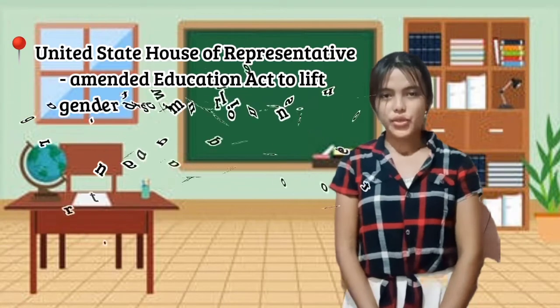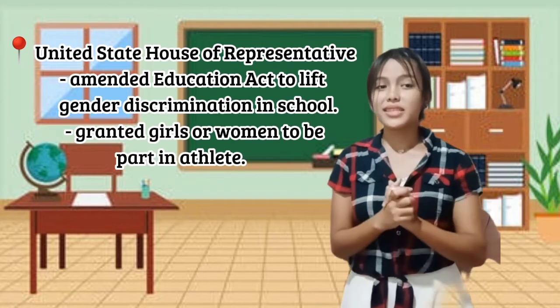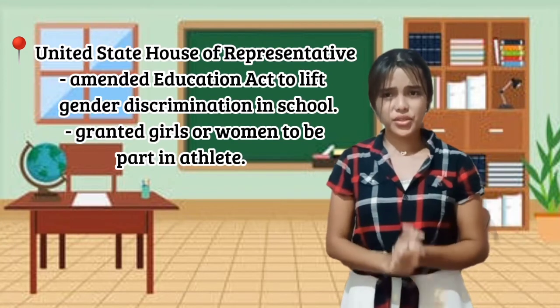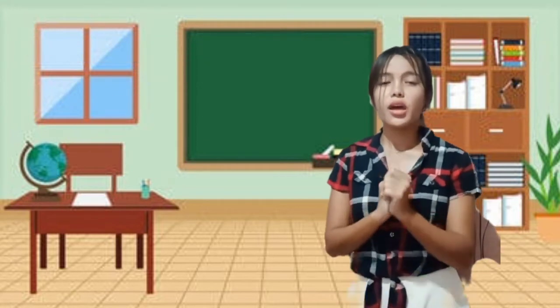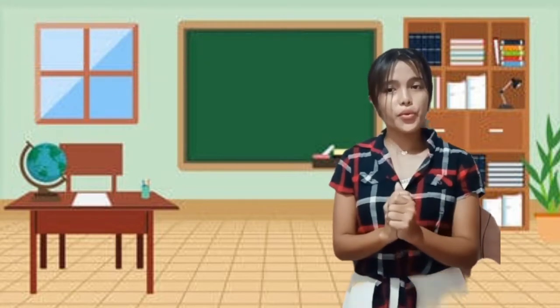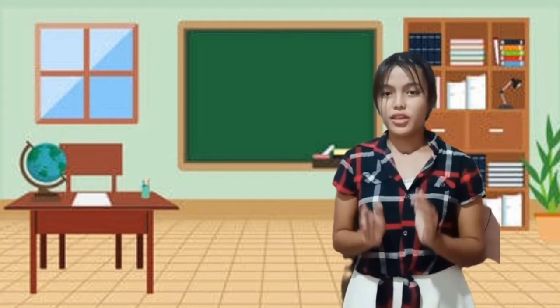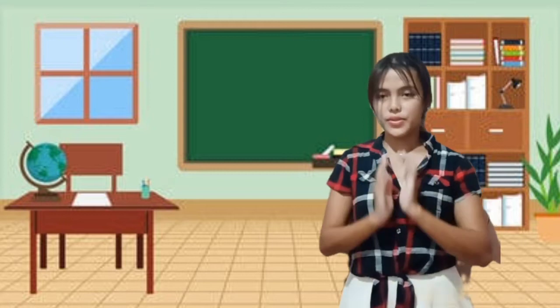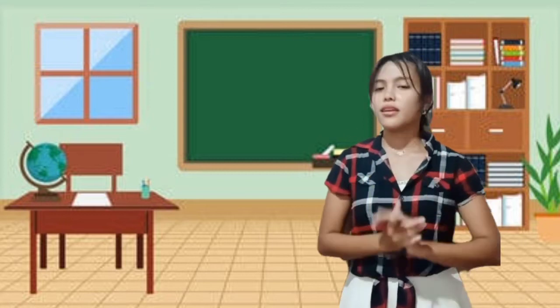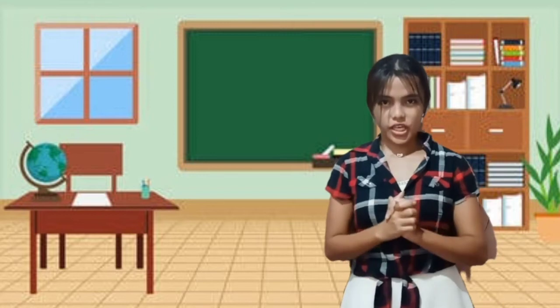In 1975, the United States House of Representatives amended the Federal Education Act in order to lift gender discrimination in school physical education programs. This granted girls and women new opportunities to participate and compete athletically in high school and college.